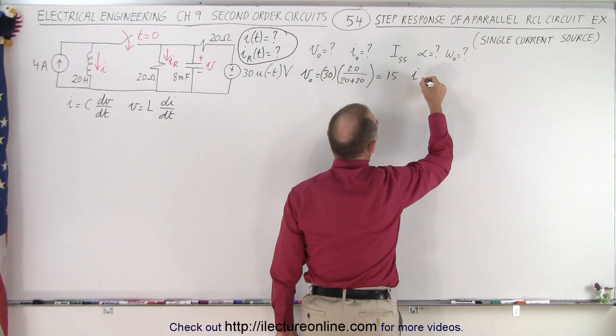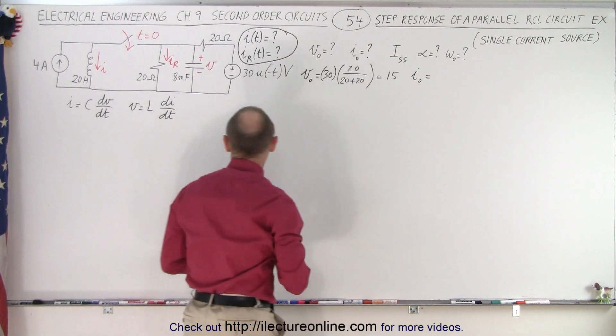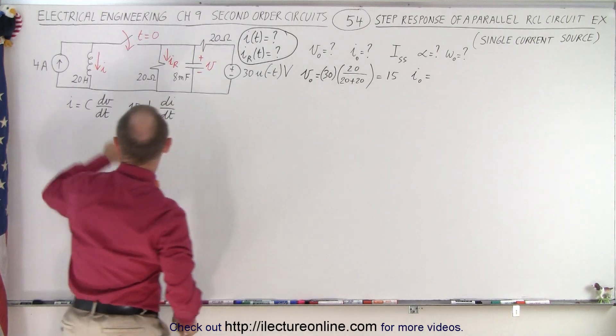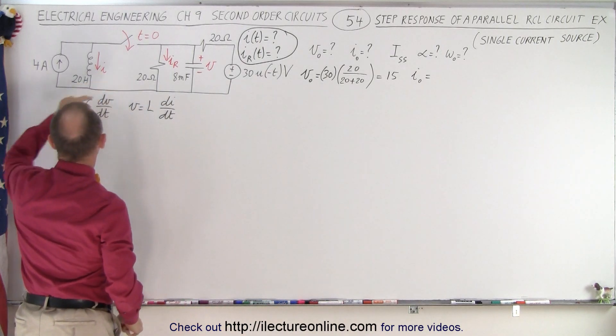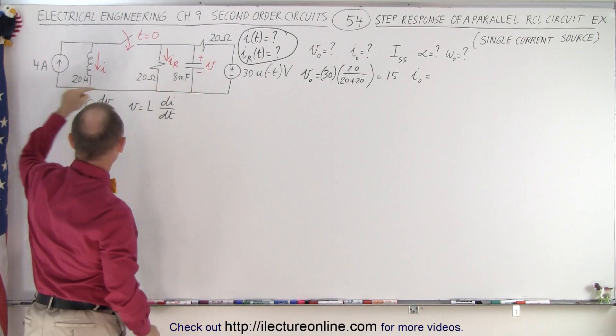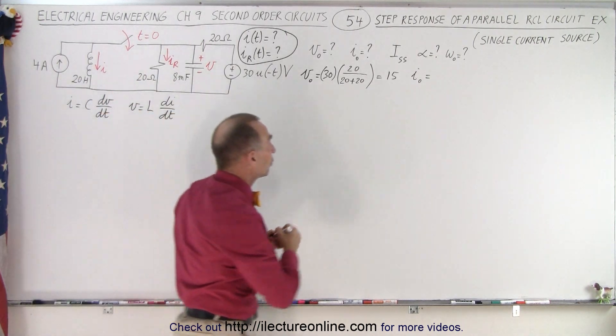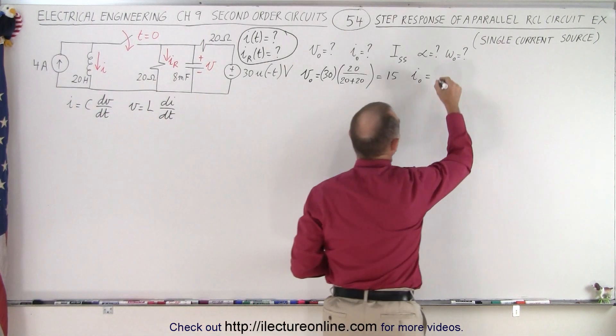How about the initial current? I initial is equal to the current through the inductor. Since it was separate from the rest of the circuit, we have 4 amps of current going through the inductor.